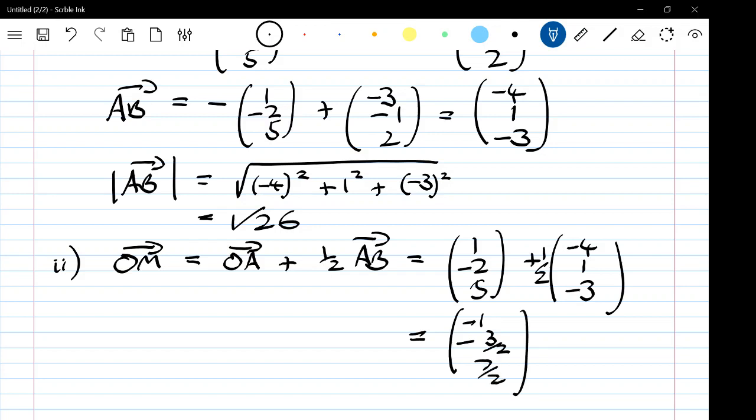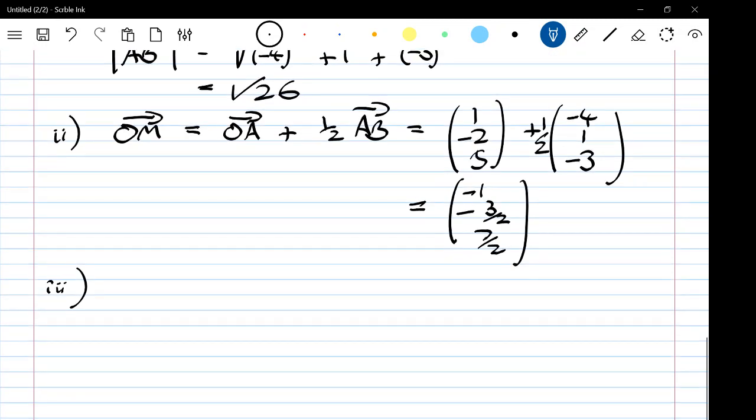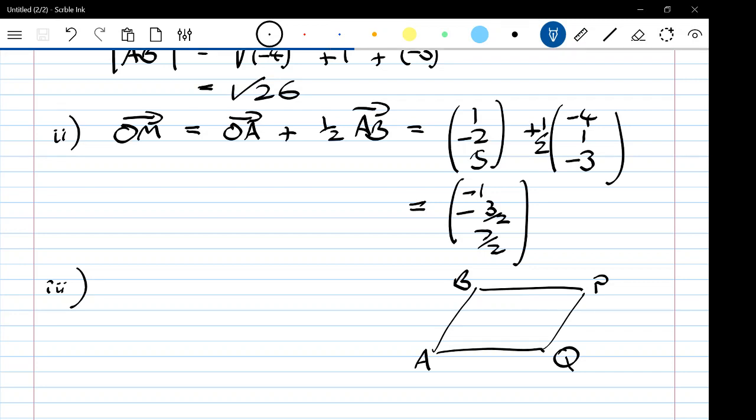The last part was the part that was less well answered. So show that ABPQ is a parallelogram. I felt that it would be helpful for me to draw a little diagram of what that is: A, B, P, Q. We normally order our letters clockwise around the shape. So how can I show that this is a parallelogram? I could do it by showing that two of the sides are parallel.